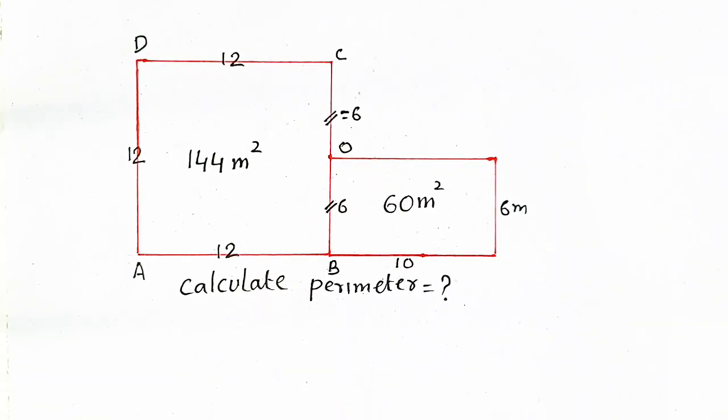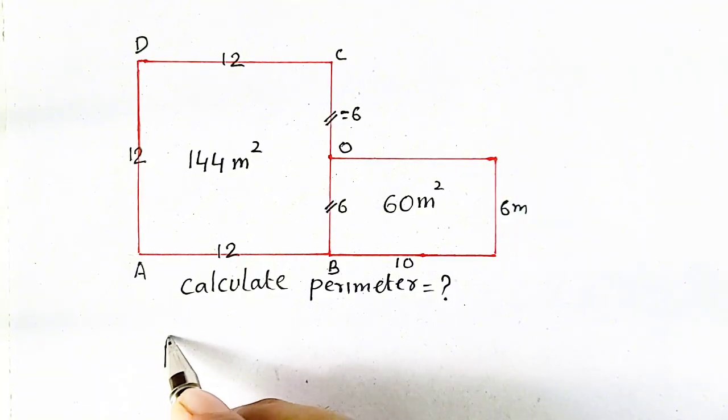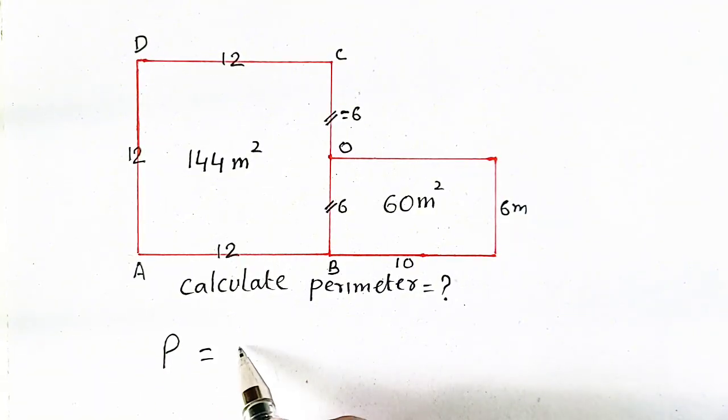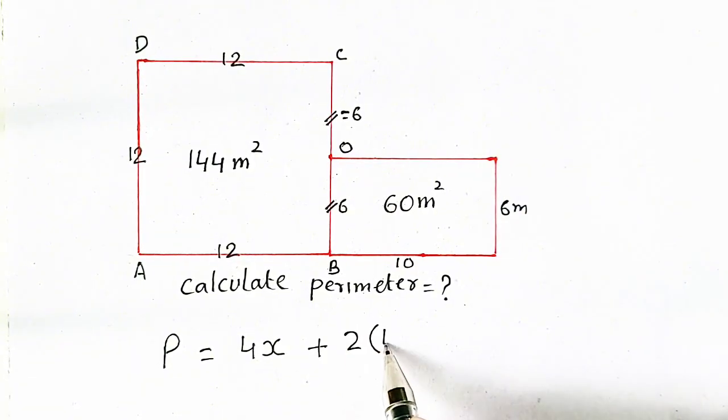So the perimeter will be equal to 4x, means 4 into side of square, plus 2 times length plus width. It is a square and it is a rectangle.